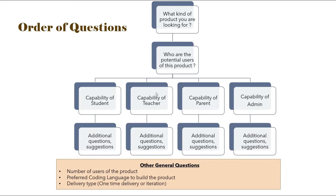As you can see in our example, there are four users: student, teacher, parent, and admin. So start with student and ask the customer what are the capabilities of a student in this product. Once you get the list of the capabilities of the student, you can ask additional questions related to any of the capabilities and you can also give suggestions to add or remove capabilities from the list. In the same way, you can pick up other user types and ask the questions.